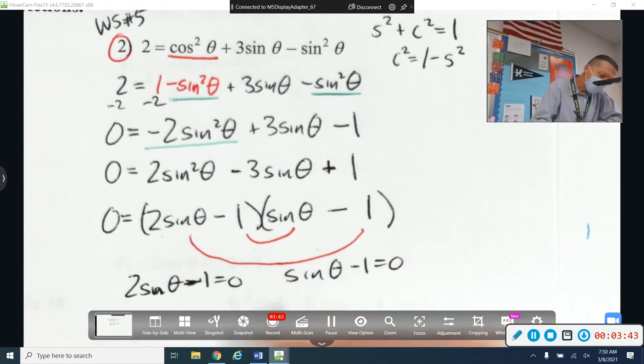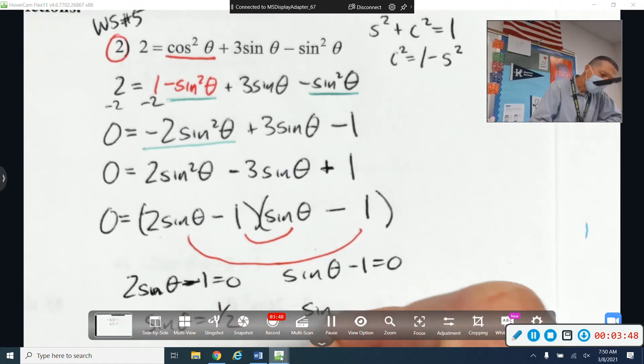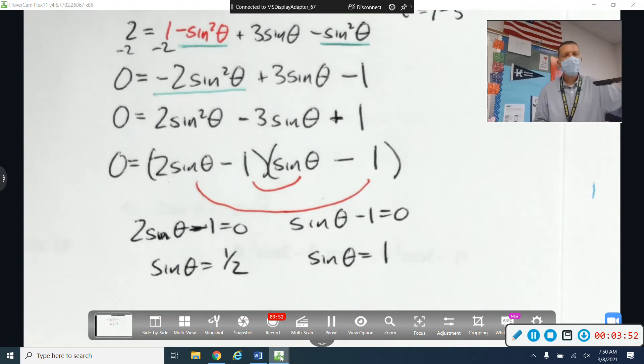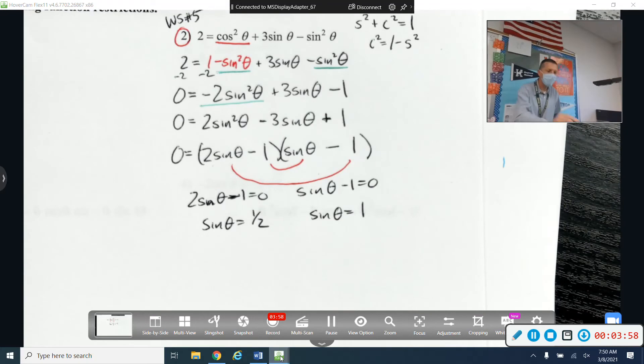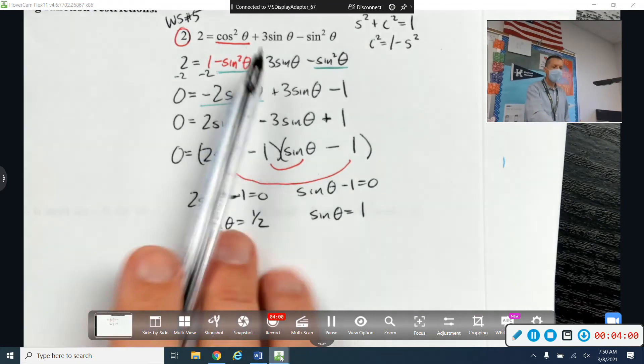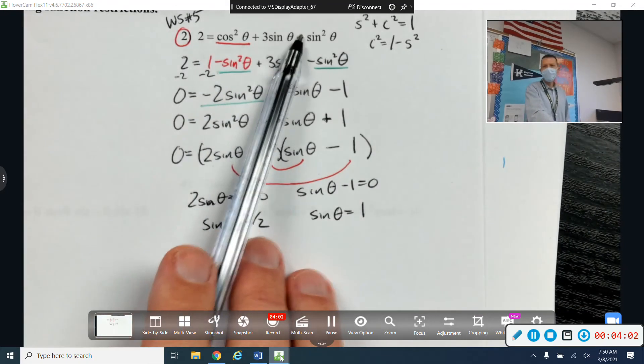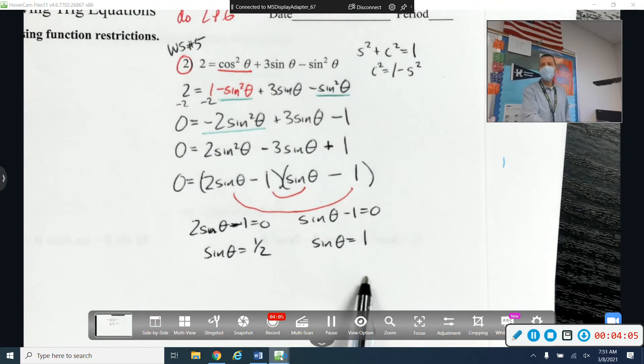Yeah, some people skip that step and jump straight to sine of theta equals one half and sine of theta equals one. Now, I'm not done with the problem, but I've said it already a couple times today. This is the point of factoring. You take an impossible problem and you turn it into two, hopefully easy problems.